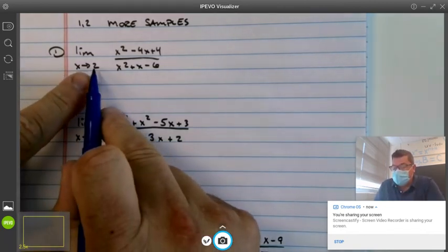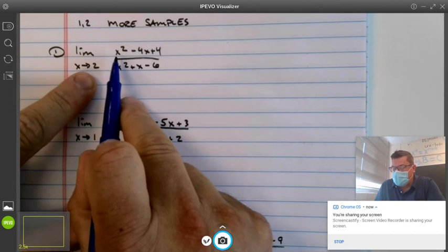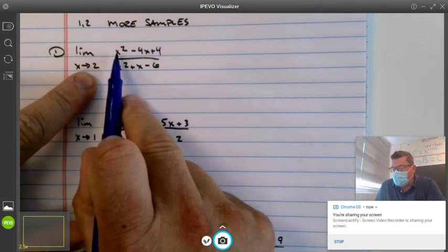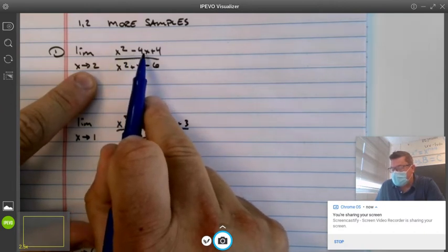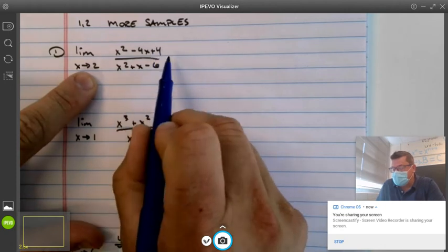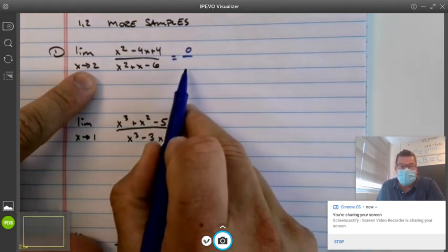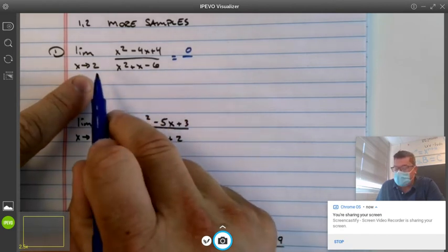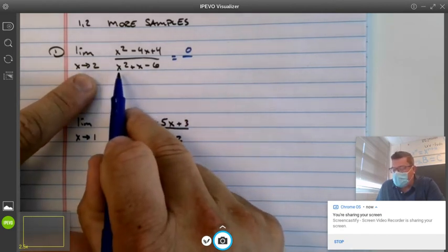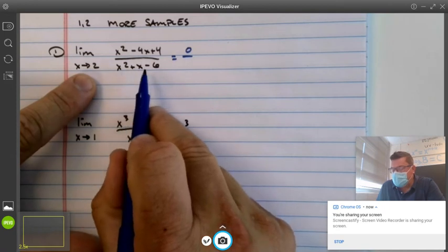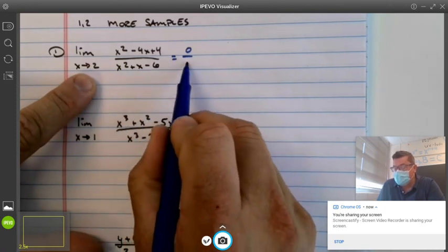Our first option is to shove this stuff in and see what happens. So when you put a 2 in there, that becomes 4 minus 8 plus 4. That is 0. Don't fret because if the bottom is some number other than 0, we're done and the answer is 0. Throw in 2 in the bottom and you get 4 plus 2 minus 6, which is also 0.